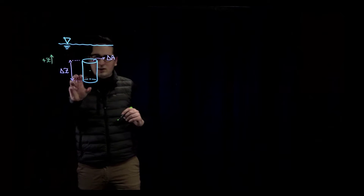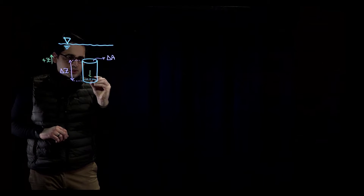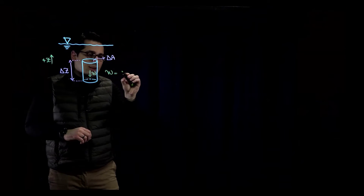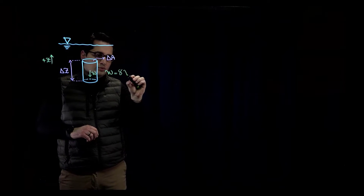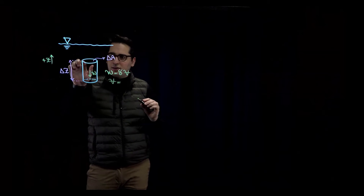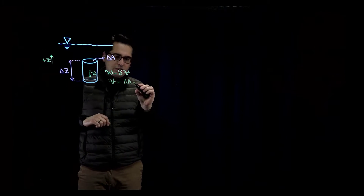Let's consider all the forces acting on this fluid element. The obvious one is W, the weight. From fluid mechanics fundamentals, W equals gamma — the specific weight of the fluid — times volume. The volume of this cylindrical shape is the cross-sectional area delta A times the height delta z.